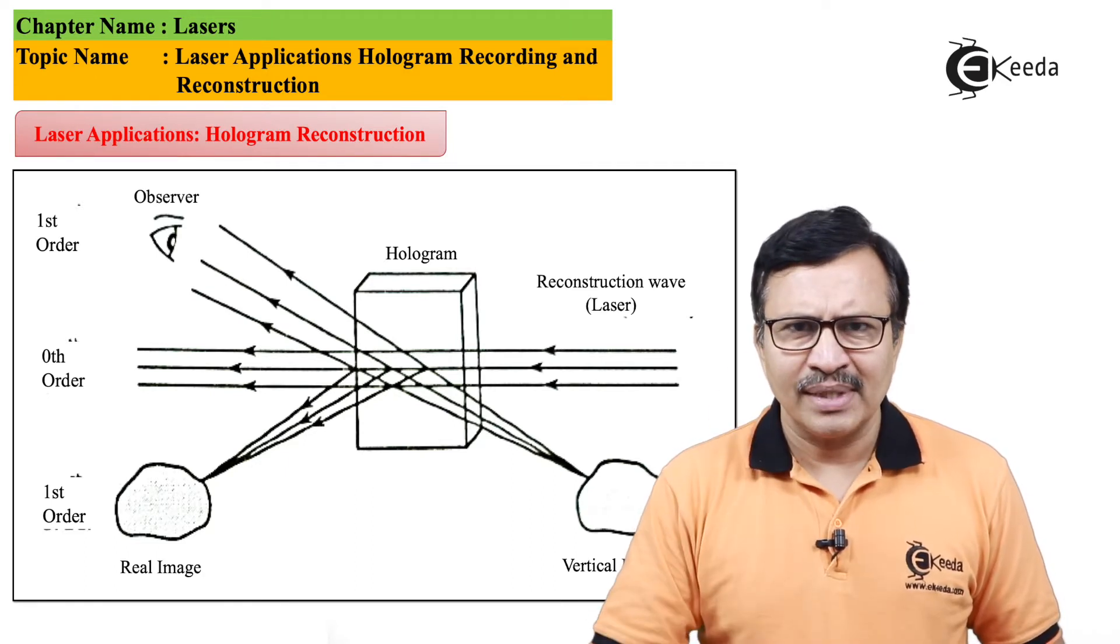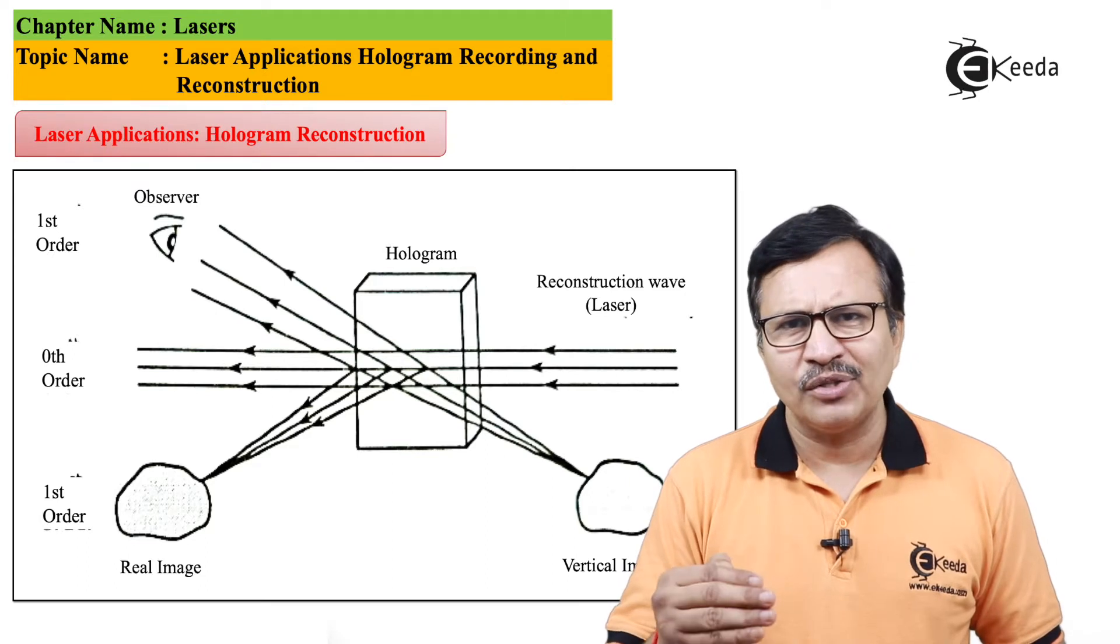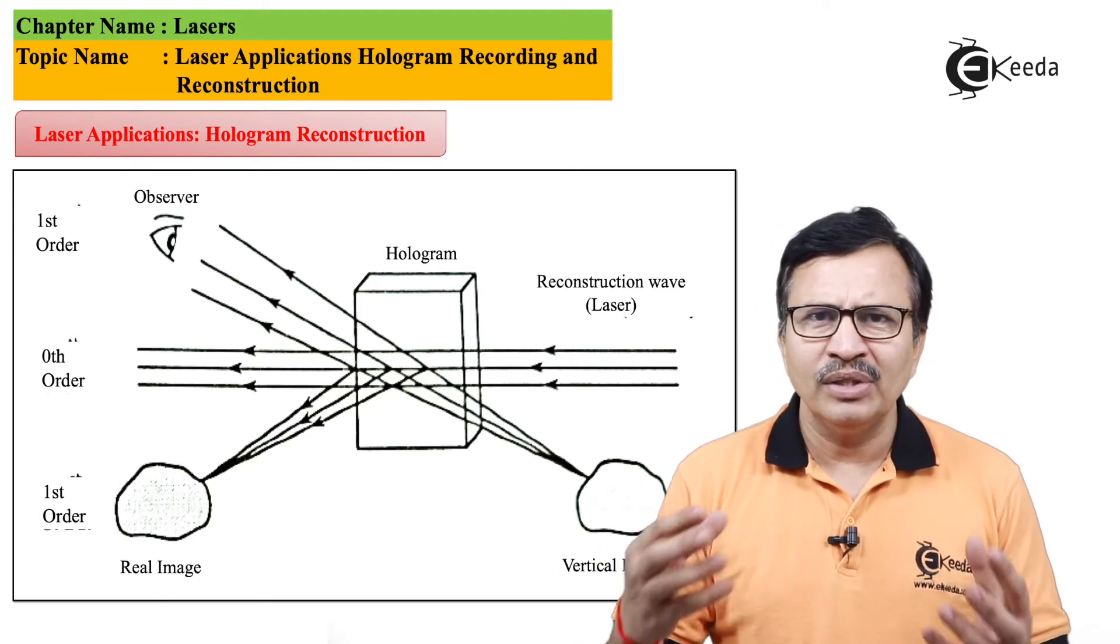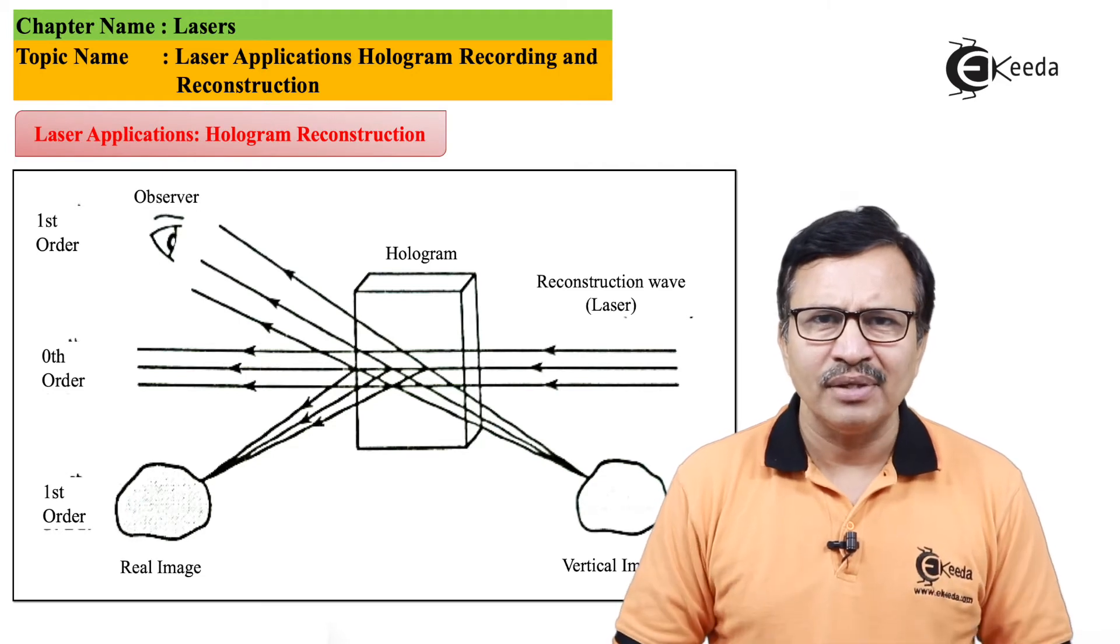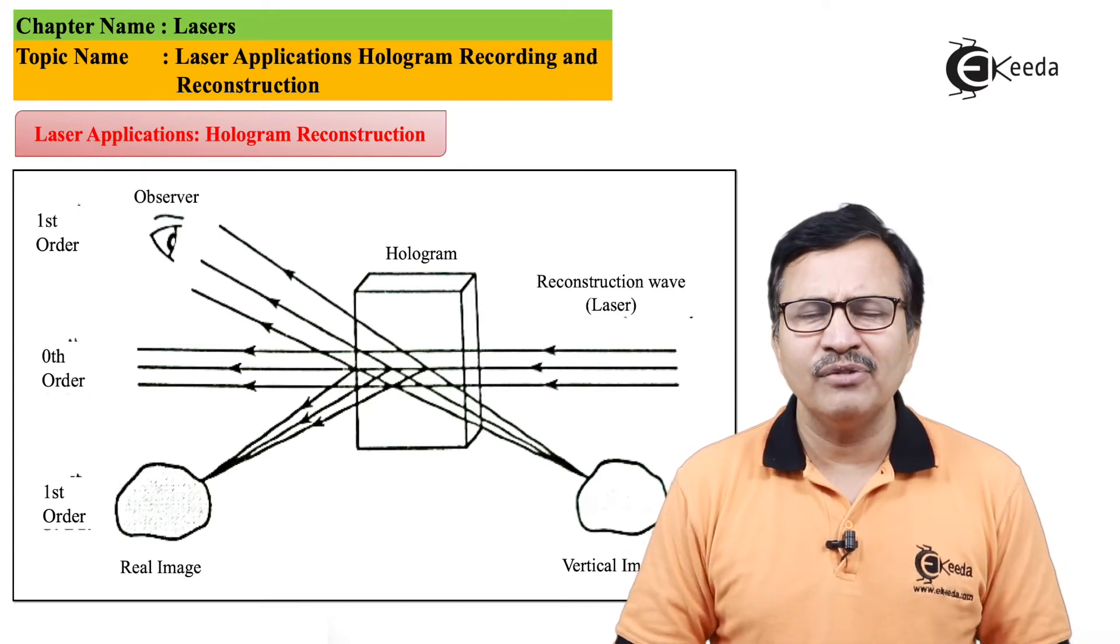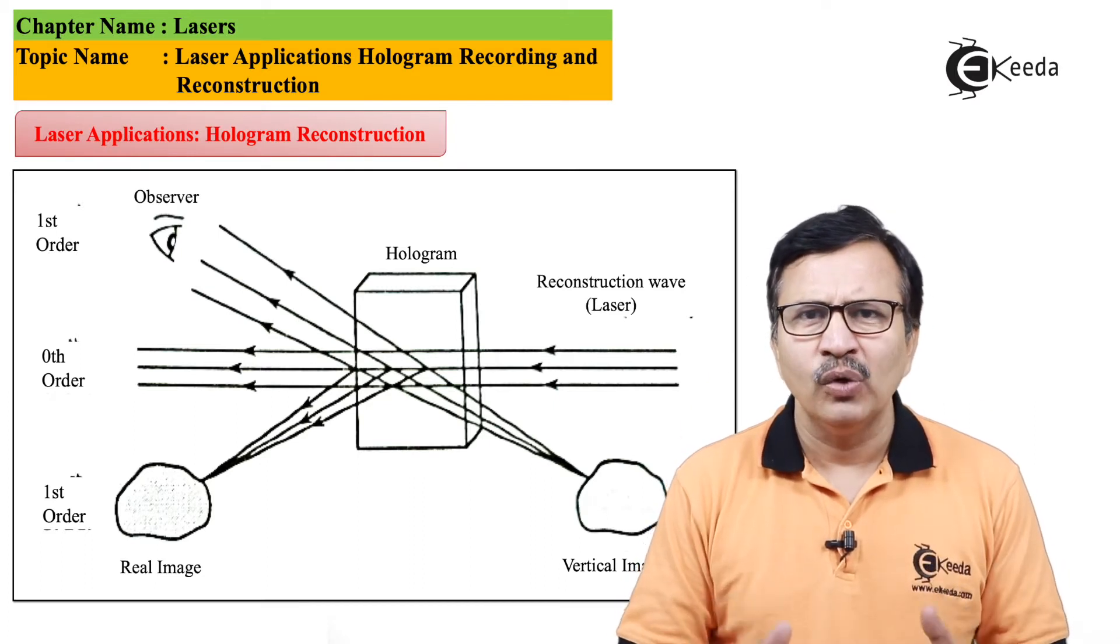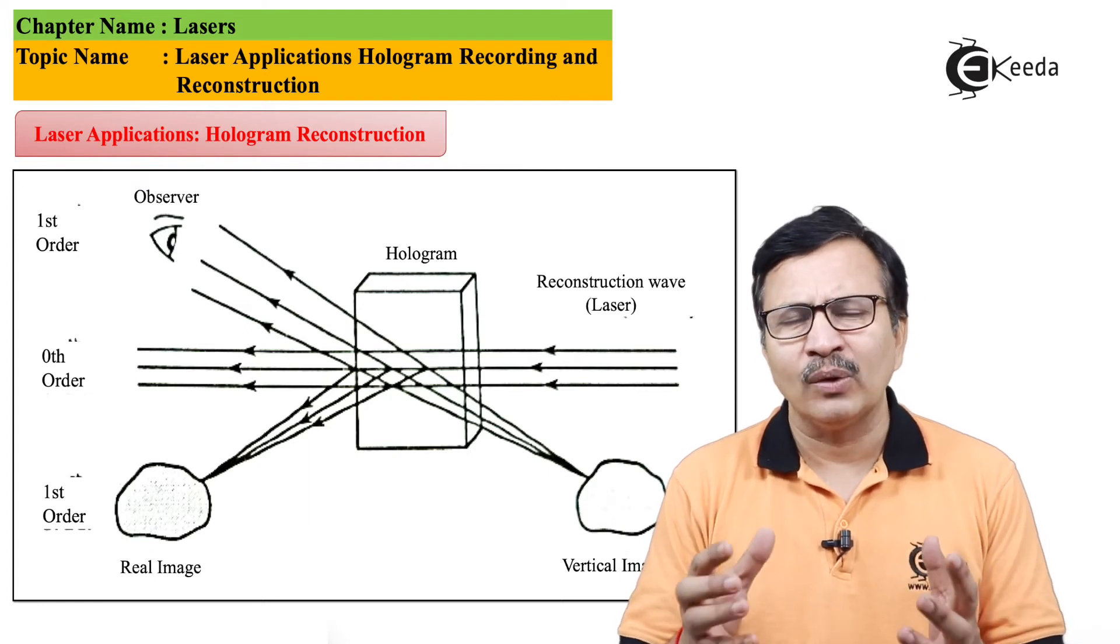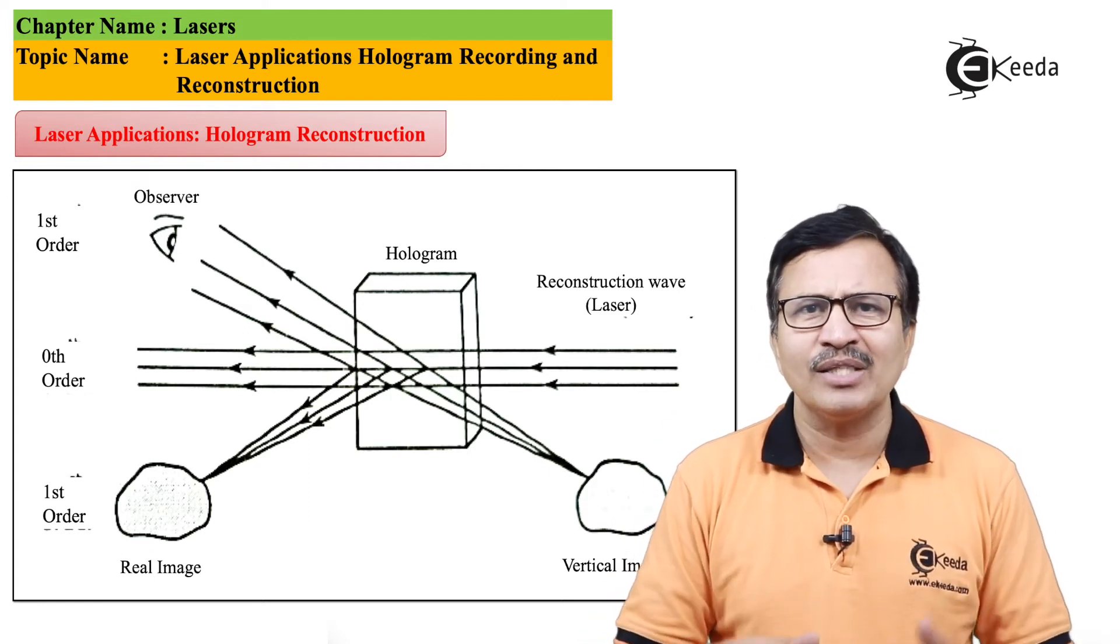And the second type of image is the virtual image which is formed behind the hologram. Now, this is basically a 3D image and you can view it from all angles. And it is this that gives you a 3D view of the entire hologram, the 3D perspective of the entire hologram of the object which has been recorded.